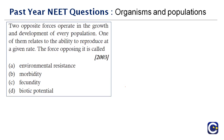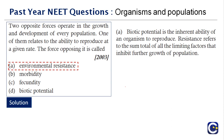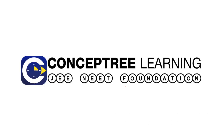Final question: two opposite forces operate in the growth and development of every population. One relates to the ability to reproduce at a given rate — biotic potential — while the force opposing it is called environmental resistance. Biotic potential is the inherent ability of an organism to reproduce, while environmental resistance is the opposing force. The right answer is option A. This completes Part 4 of Organisms and Population.